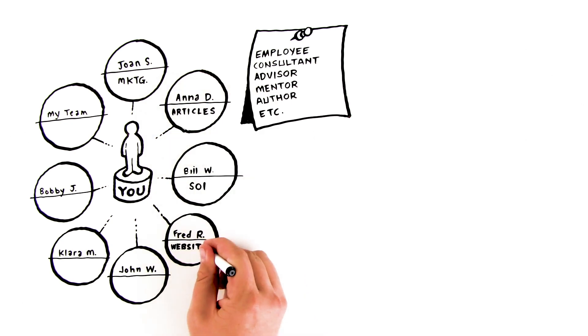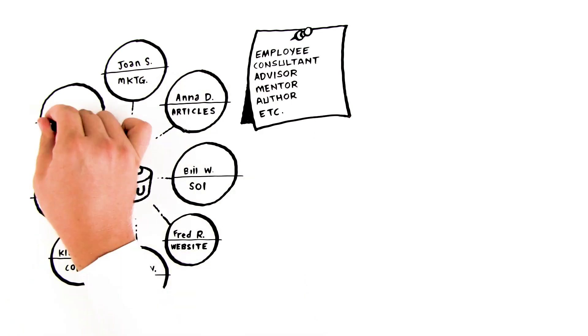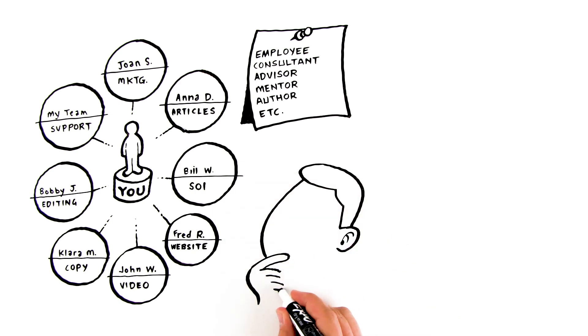After that, write the capability or skill they have underneath their names. Now, ask yourself, are you spending enough time and attention on these people?